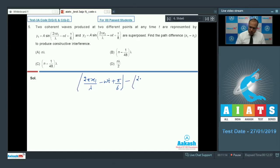Minus of 2πX2 by λ minus ωT plus π by 8 must be equal to 2nπ.